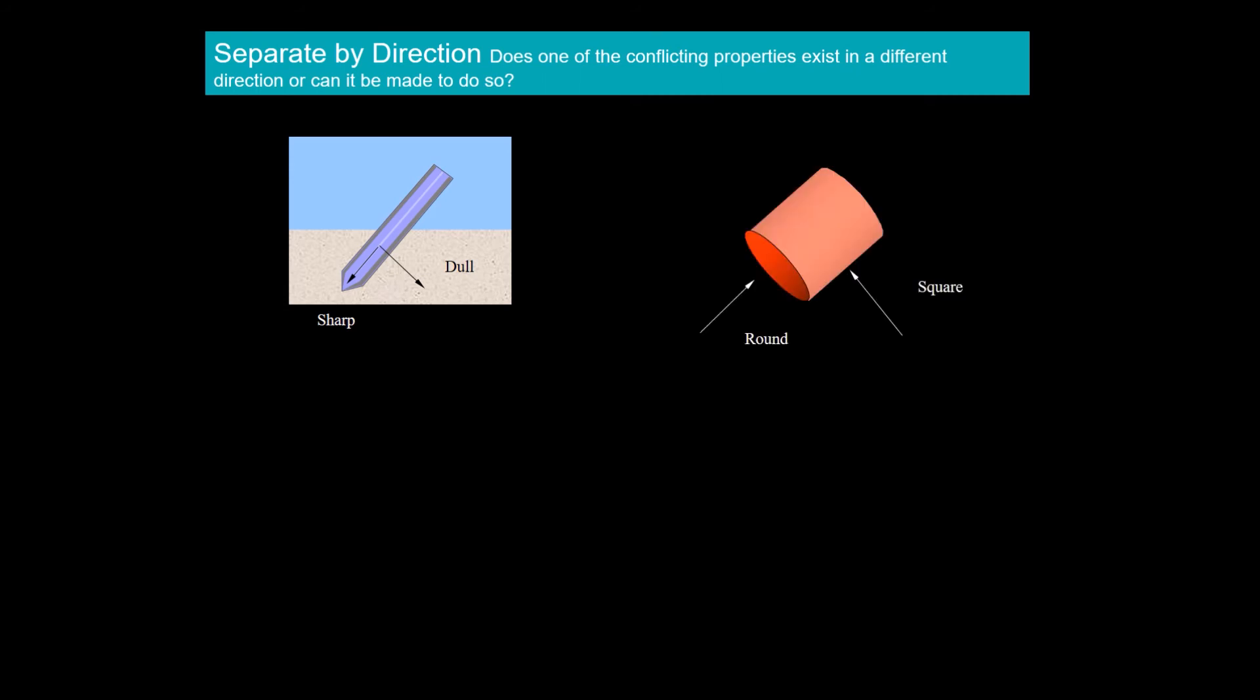Note that a round cylinder looks and acts square from the side. A beam can be stiff in one direction and flexible in another.